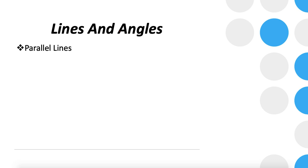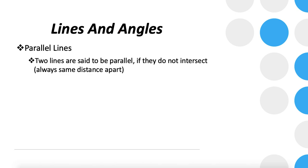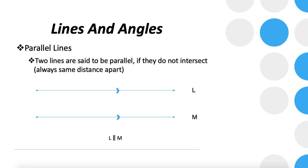Now let's talk about parallel lines. Parallel lines are two lines that never intersect and maintain a constant distance between them. In exam diagrams, you may see arrows on both lines instead of a written statement indicating they are parallel. The notation to represent parallel lines is L parallel to M.